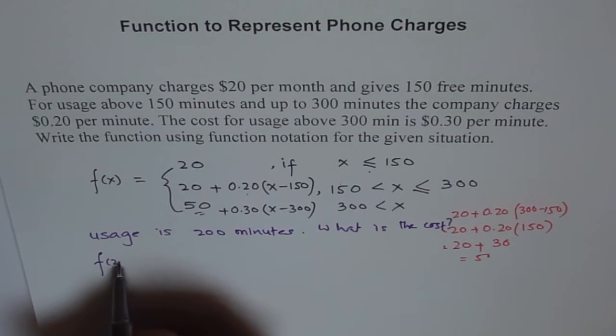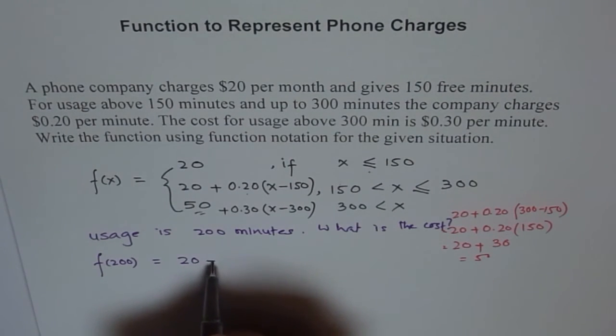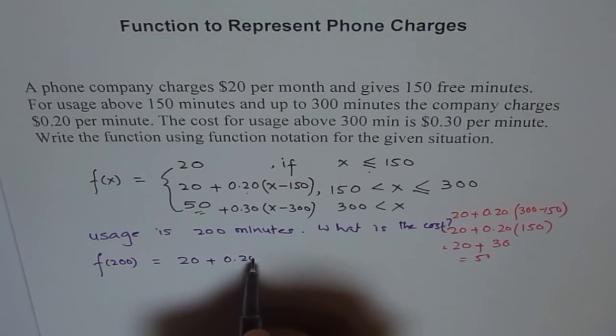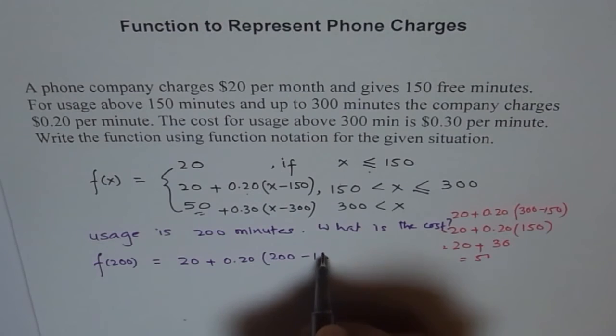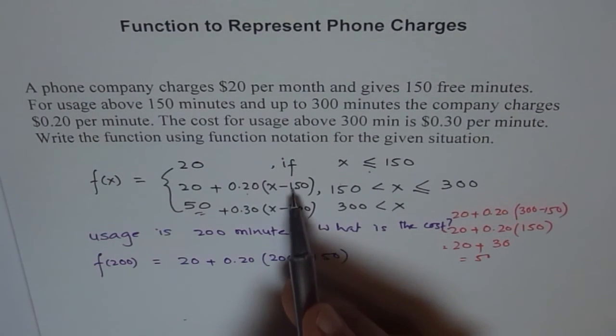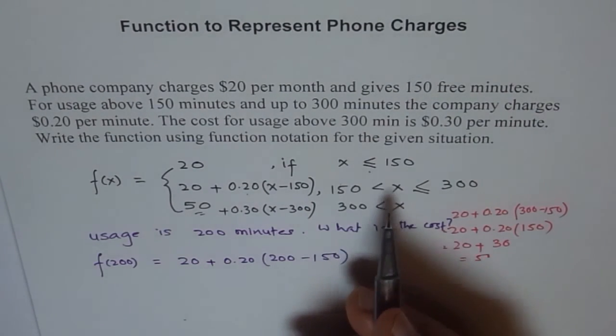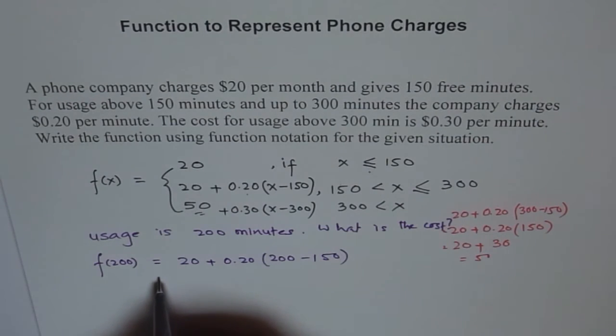So we say, f of 200 is equal to 20 plus 0.20 times 200 minus 150. So this is the cost, and we are going to use this equation, from where you can calculate the answer.